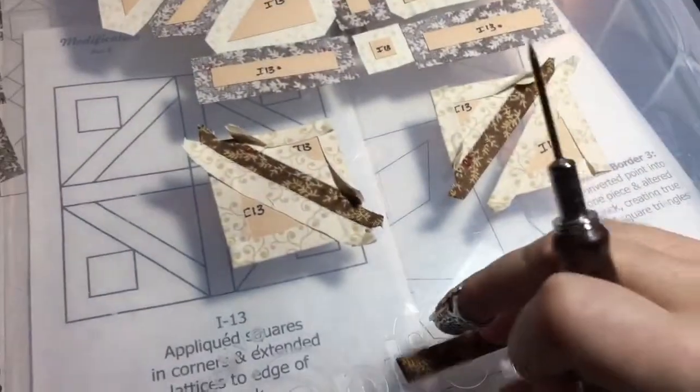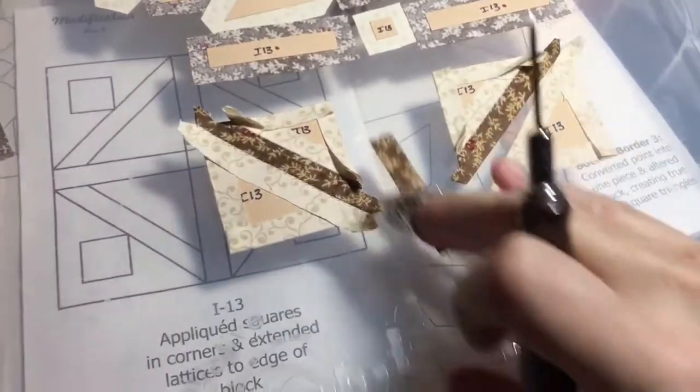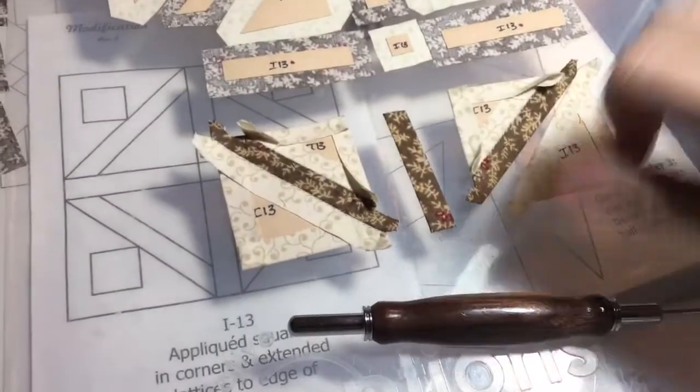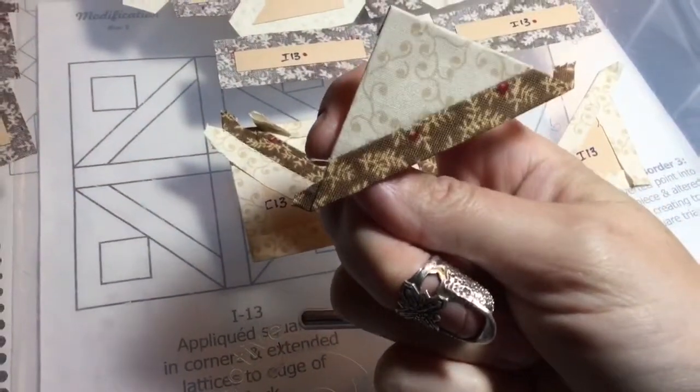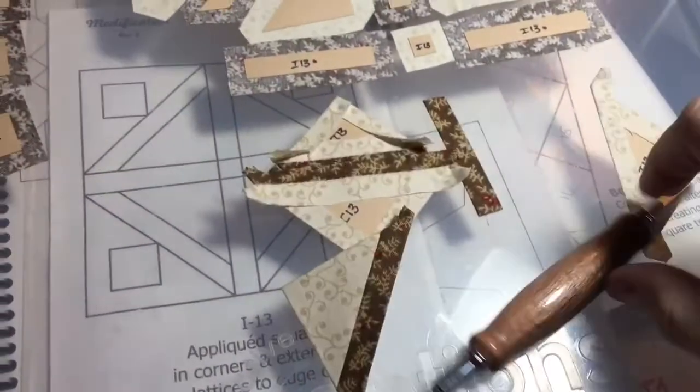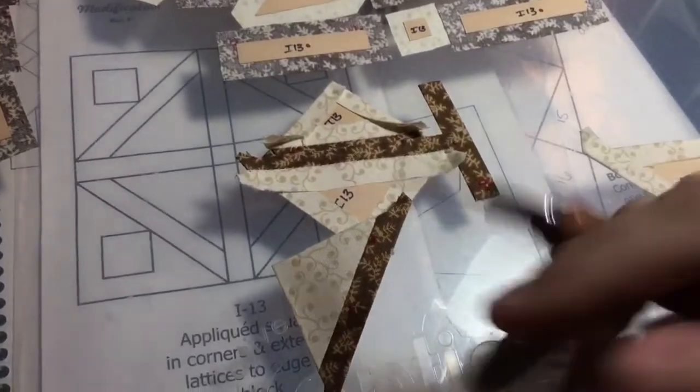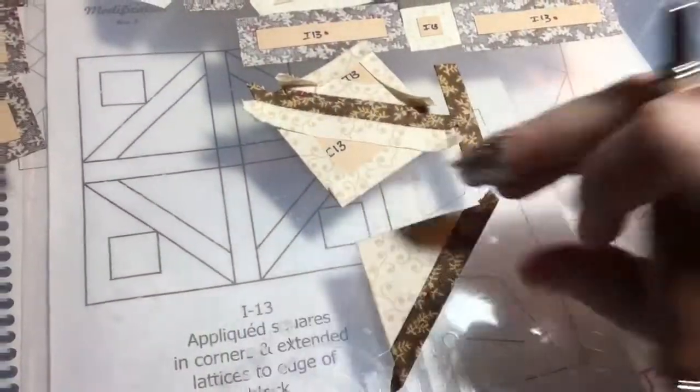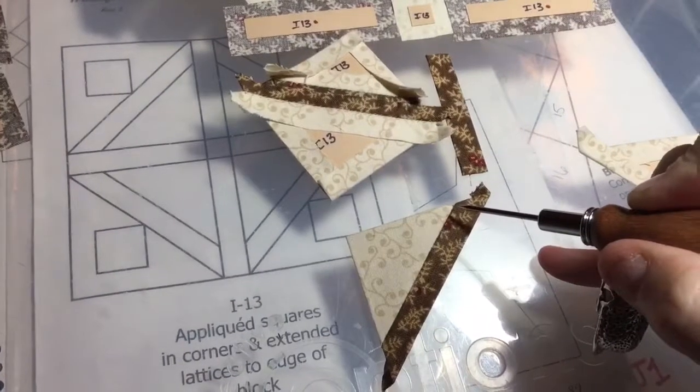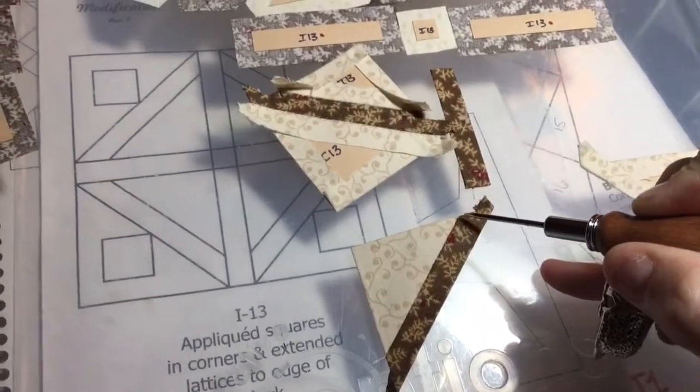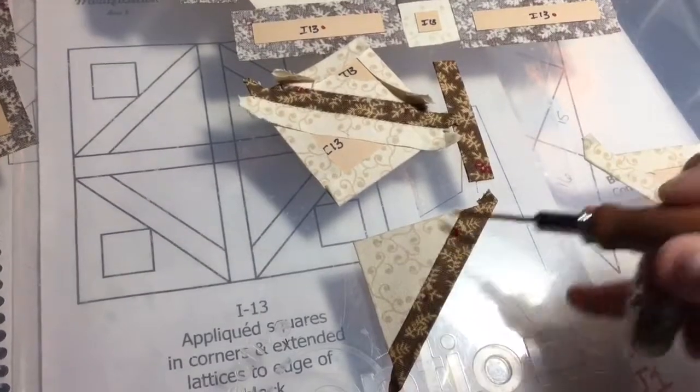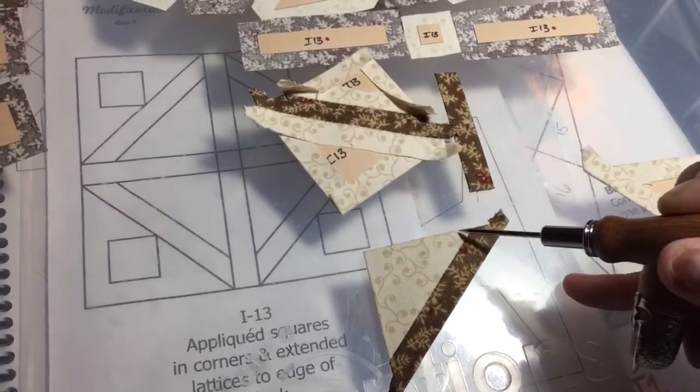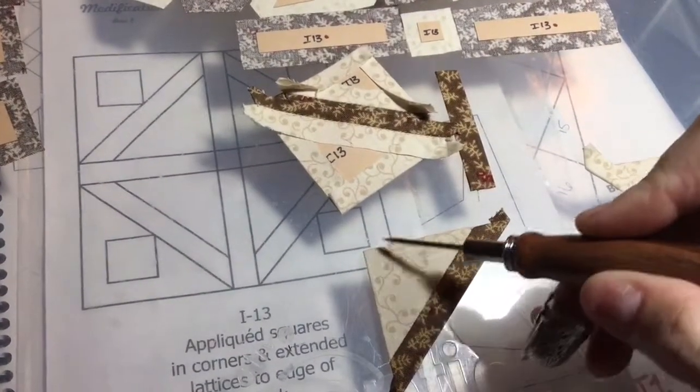So the one thing I did notice that I would send a, I wouldn't say a red flag, but just be aware of is when you go to baste these angles, which are this side of this angle. Whenever you have a corner that's less than 90 degrees, because this is more than, this is 90 degrees.